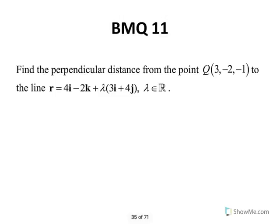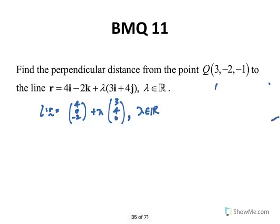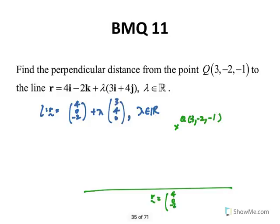How to find the geometrical distance from the point to the line. The line is R equals 4, 0, negative 2 plus lambda times 3, 4, 0, where lambda is a real number. The point Q is 3, negative 2, negative 1.